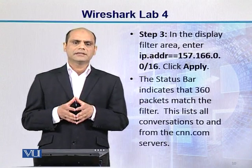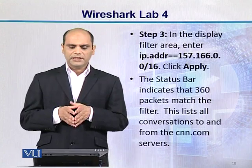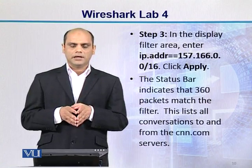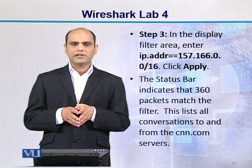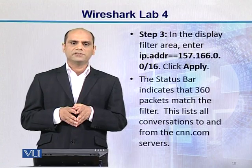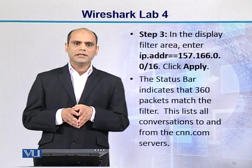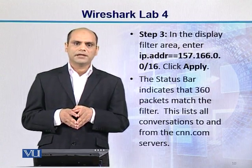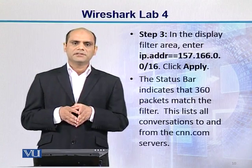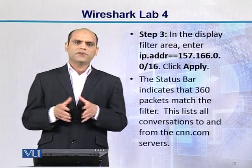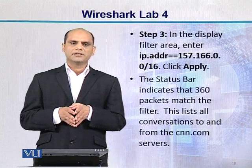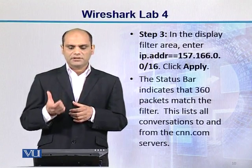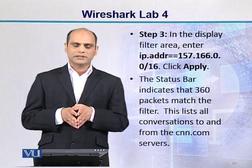Ab step number 3 mein filter apply karte hain. Yeh jo filter hai, hum enter karte hain: ip.addr (which is a double-d-r) == 157.166.0.0/16. Jab aap isse display filter area mein apply karte hain, toh aapko Apply ka button press karna padega. Jab aap Apply ka button press karte hain, toh ye filter apply ho jaayega. Is trace file mein jo itni saari packets humne capture ki thi, unmein se ab woh saari packets jinka IP address ye hai, unko woh show kar dega.